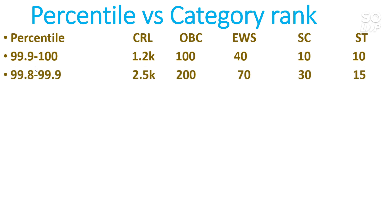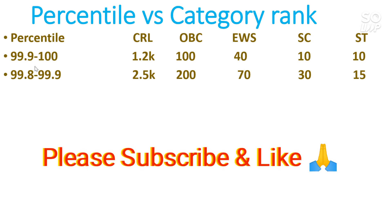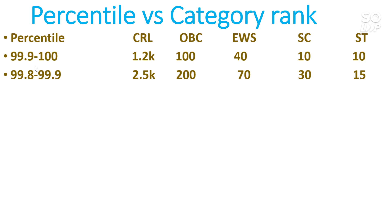For 99.8 to 99.9 percentile: CRL under 2,500, OBC under 200, EWS under 70, SC under 30, ST under 15. There will be around 12 lakh unique students in total. Many students appear for two or three attempts — about 6 lakh in February, 5 lakh in March, 7 lakh in April — totaling 21 to 22 lakh appearances, but unique students are only around 12 lakh. This video is based on that data.